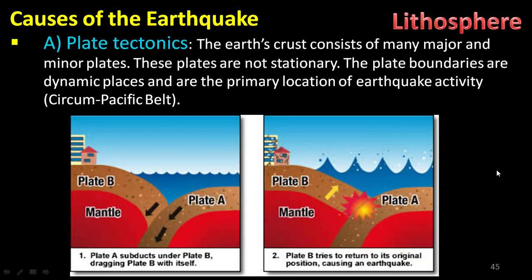Now, what are the important causes of earthquakes? The first is plate tectonics. The earth's crust consists of many major and minor plates — you can see plate A and plate B on the diagram. These plates are not stationary; they move from one place to another. The plate boundaries are dynamic and are the primary location of earthquake activity. The Circum-Pacific Belt is an example. When there is a clash between plates, dangerous earthquakes occur.